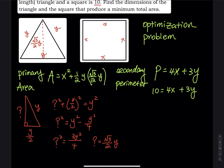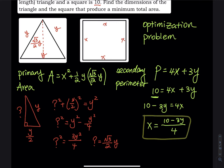The problem with the primary equation is that we cannot work with two independent variables at the same time, so we have to eliminate one. We'll use y as the only independent variable. From the secondary equation 4x + 3y = 10, we solve: x = (10 − 3y) / 4. We'll substitute this expression for x into the primary equation.